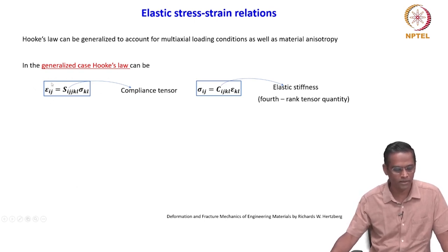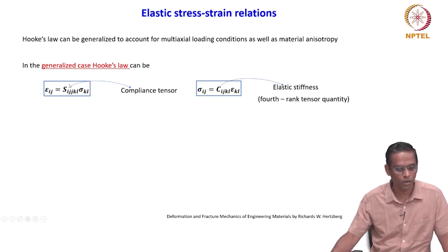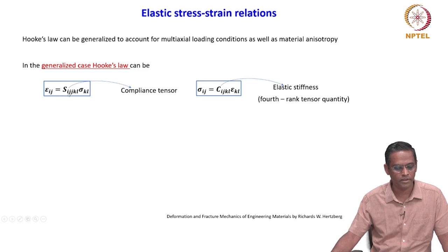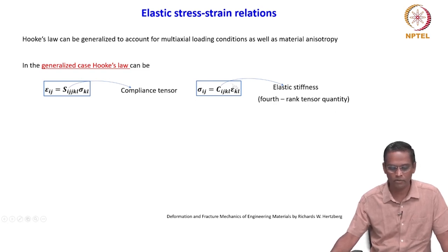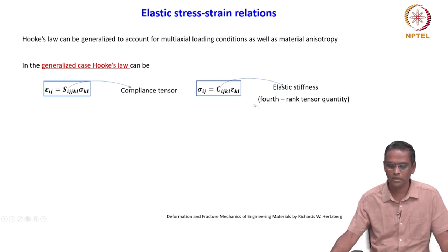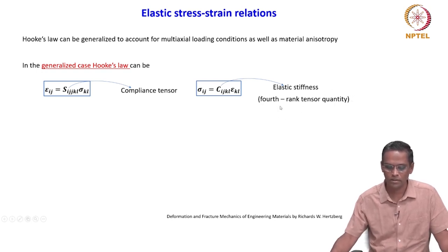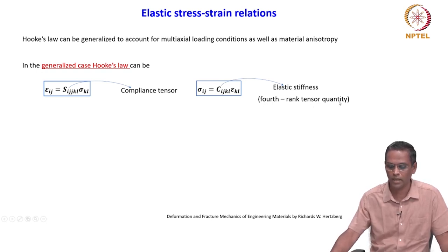The generalized Hooke's law can be written in tensorial notation as epsilon_ij equals S_ijkl times sigma_kl — note there is a typo, it is ijkl not double j — where S_ijkl is the compliance tensor. Similarly, we can write for stress: sigma_ij equals C_ijkl times epsilon_kl, where C_ijkl is the elastic stiffness, described as a fourth rank tensor quantity.